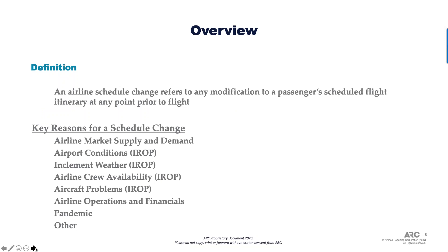The first area is definitions. There are a lot of different definitions out there for what falls into an IROP versus a schedule change. Looking at various reasons: airport conditions, inclement weather, crew availability, an aircraft problem, a mechanical issue — those should all be defined as IROPs, irregular operations. Something about market supply and demand changes, not flying to a city tomorrow, any kind of operational issue like the 737 MAX, or a pandemic — those are big reasons for a schedule change.